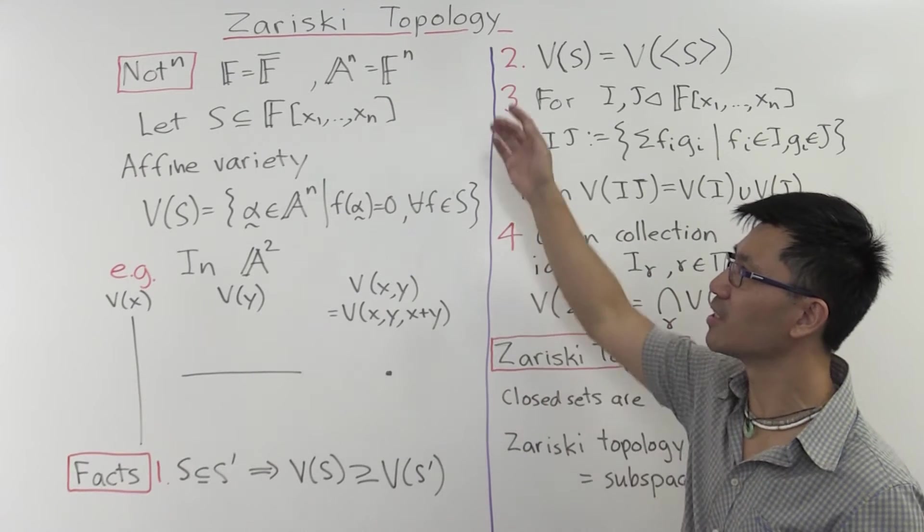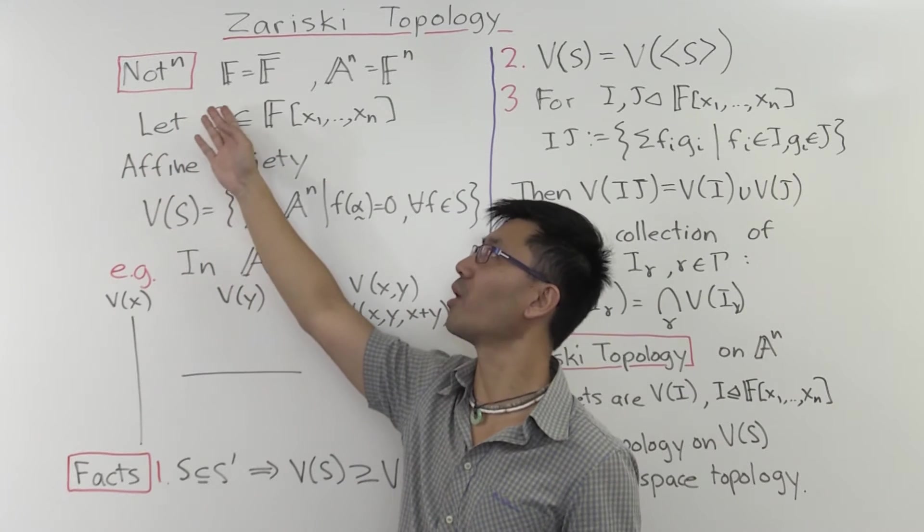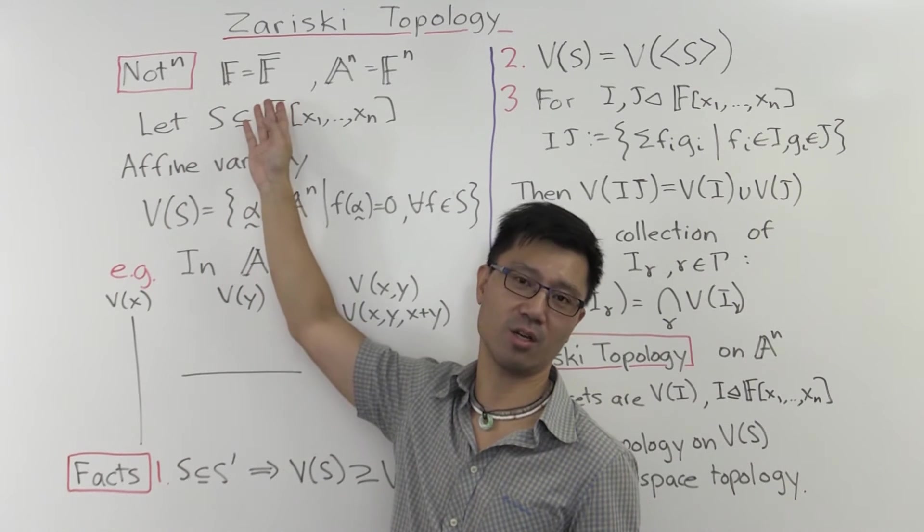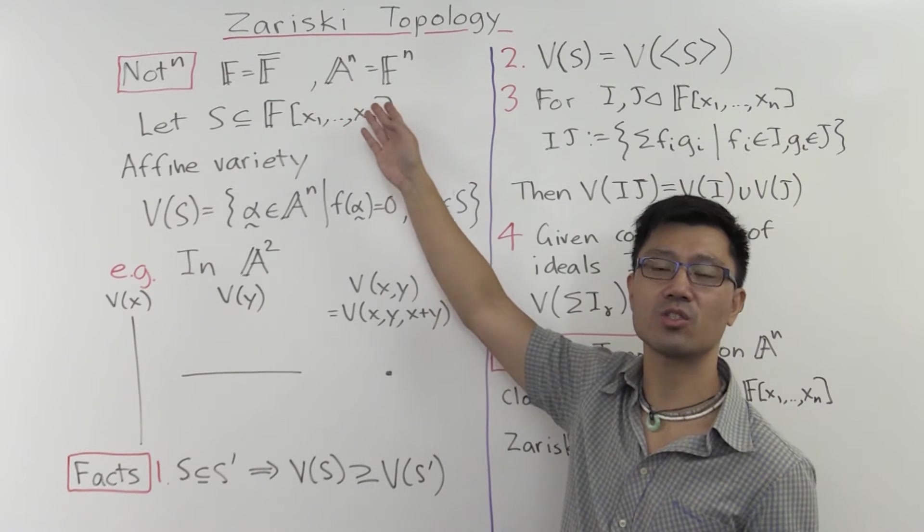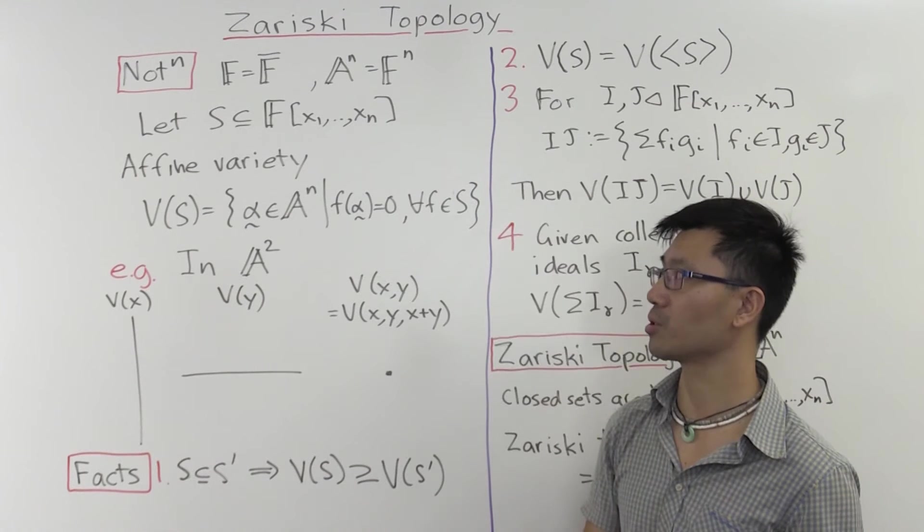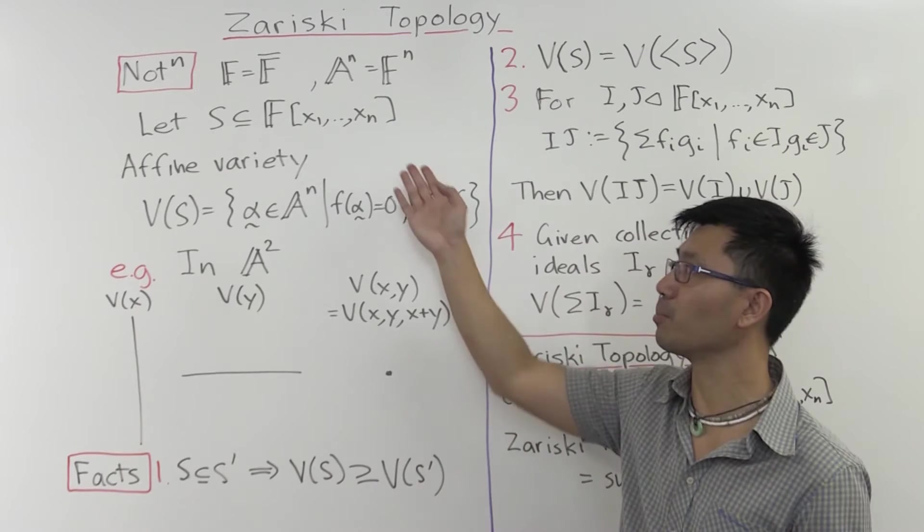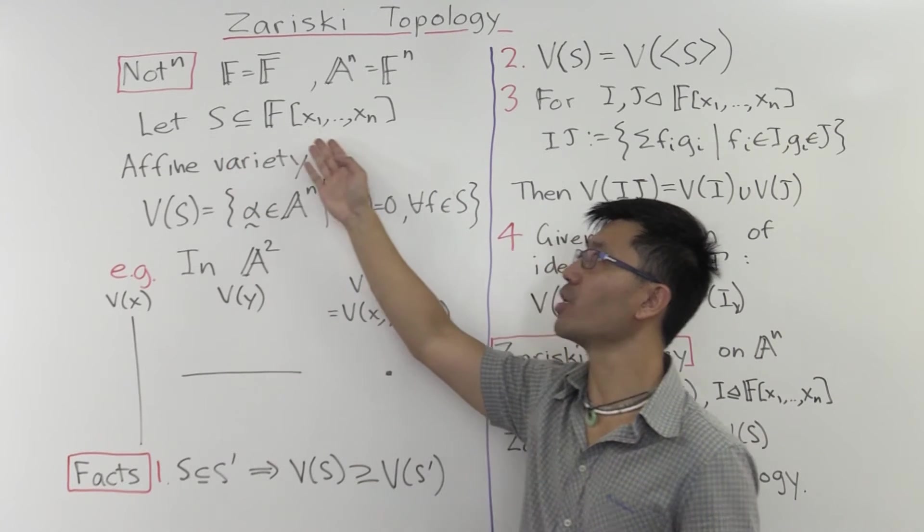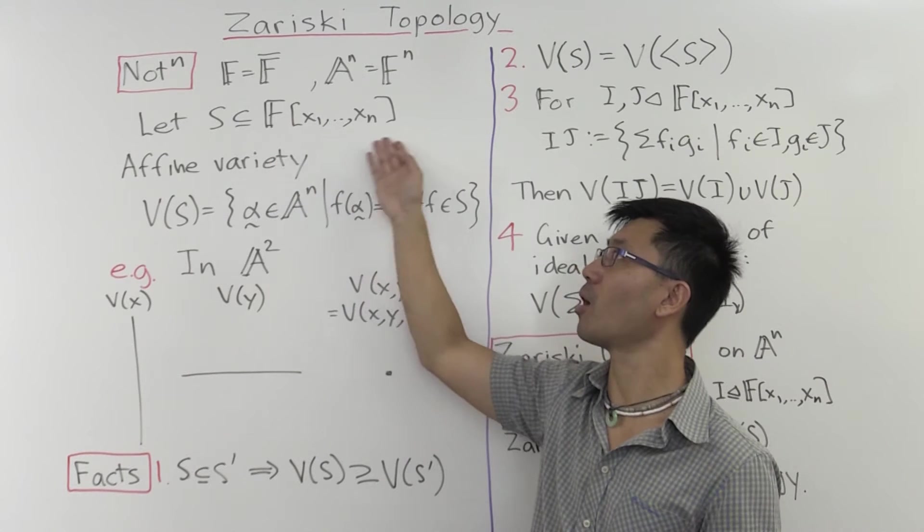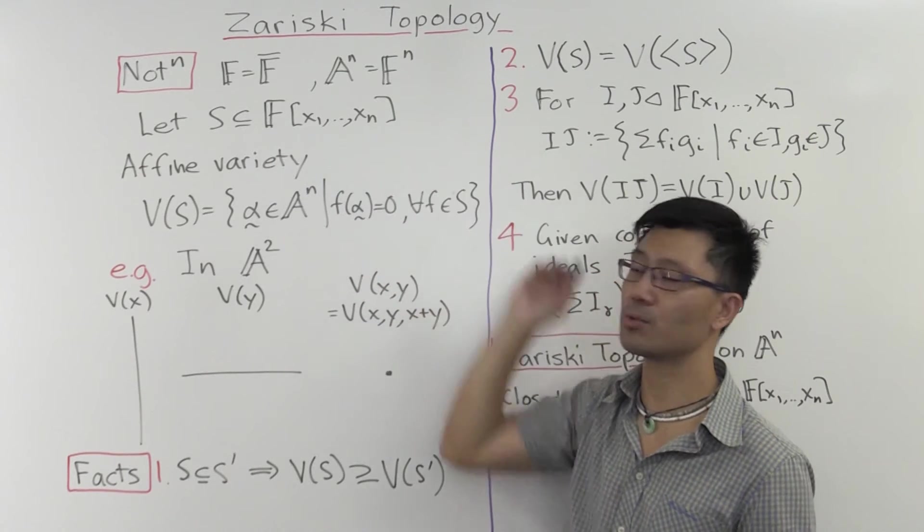Okay, so to describe it, let me set up the notation that we have. As usual, we'll have F is an algebraically closed field. And we'll use the symbol A^n, affine n space, to denote the set of all n-tuples. We want to work a little bit more generally than we have done it before, and look at sets of polynomials inside this polynomial ring. So polynomials in variables x1 up to xn.